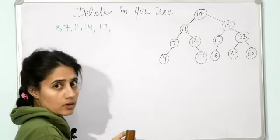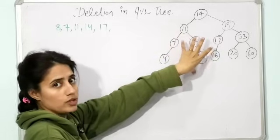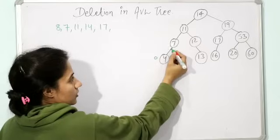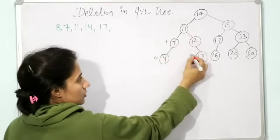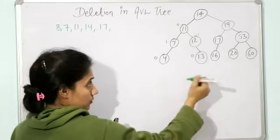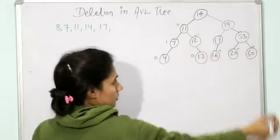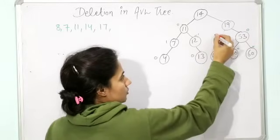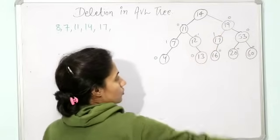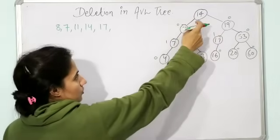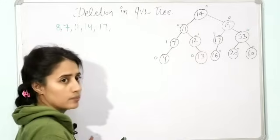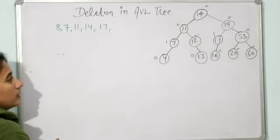Now check out the balance factor after deletion of 8. Balance factor of this node is 0; this one is left minus right = 1; this one is 0; this one is 0 minus 1 = minus 1; this one has height of left subtree 2 and height of right 2, that is 0; this one is 0; this one is also 0. Balance factor of 14 is height 3 minus height 3 = 0. So this tree is balanced — no need to balance it out.